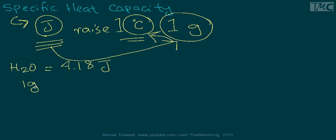Which basically means that if you have one gram of water, it would take 4.18 joules of energy from the surroundings to raise one gram of water's temperature by one degree Celsius.